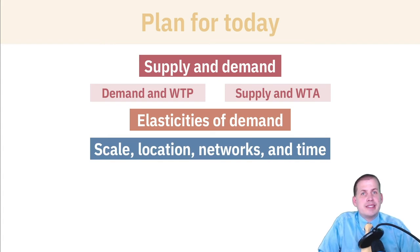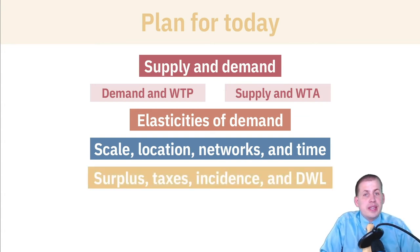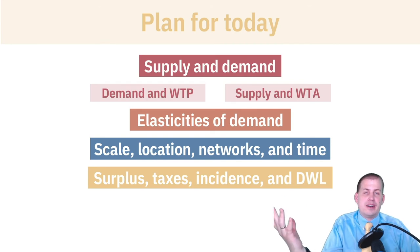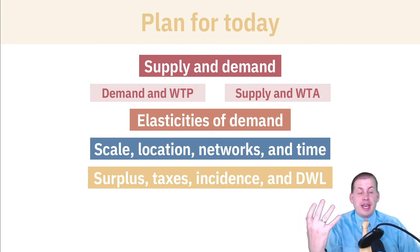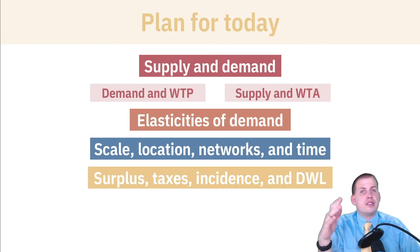Then we'll talk about what happens as firms get bigger or start working together — there are different effects on their costs, and you can actually create more output for cheaper as firms scale. After that, the most important section for public policy and public administration: we'll talk about taxes and what happens when you impose taxes on different products or firms. Taxes distort markets, and the government's job is to raise revenue while minimizing those distortions. We'll look at guidelines for imposing taxes across different firms and markets.